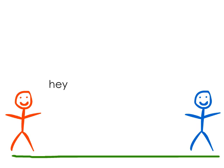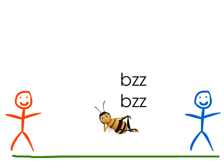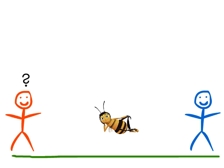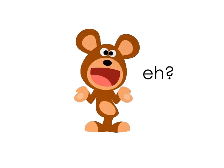Since there is no collision detection, you must receive acknowledgement from your friend that he heard your message. If, say, a bee started buzzing at the same time you were yelling, your friend would not hear you. You would wait a random amount of time and yell at your friend again. This is not the perfect analogy, but it gives you a rough idea of how collision avoidance works.